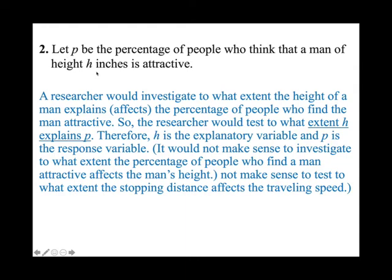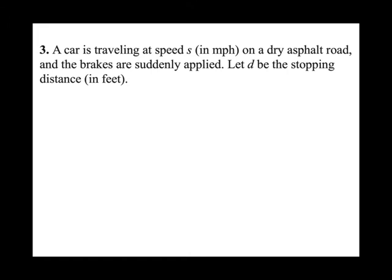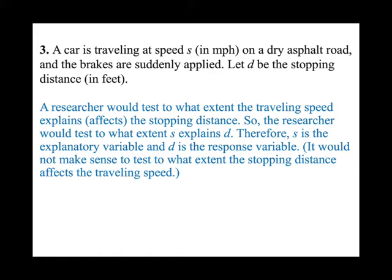A car is traveling at speed S in miles per hour on dry asphalt and the brakes are suddenly applied. Let D be the stopping distance. Think about which is the explanatory variable. The traveling speed affects the stopping distance, so S is the explanatory variable and D is the response variable — D is called the dependent variable because it depends on your speed.